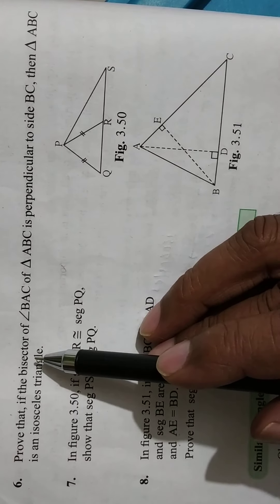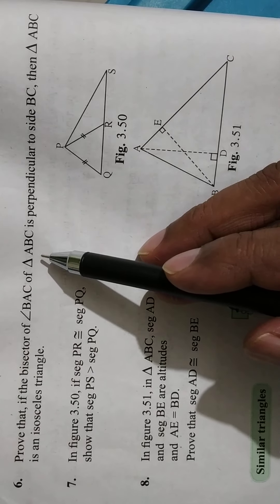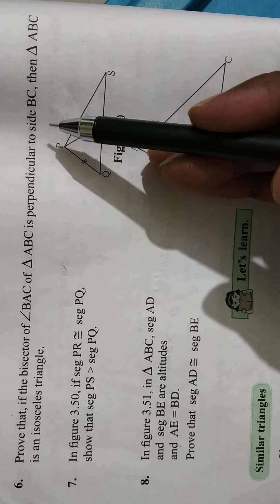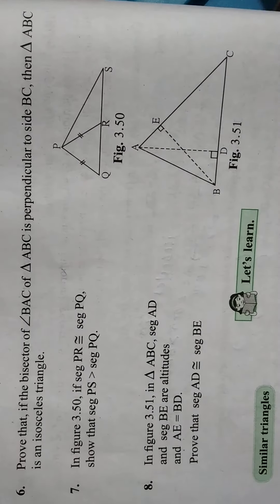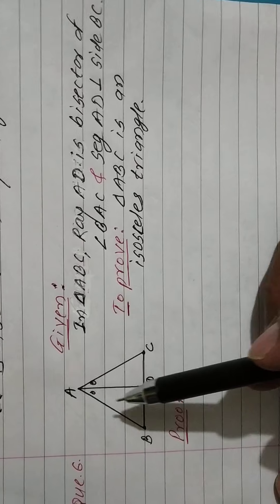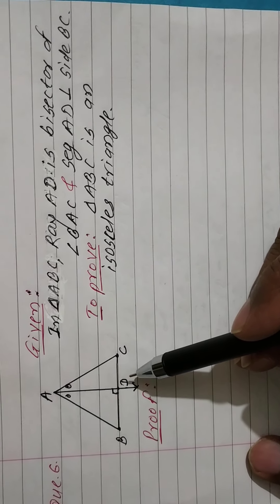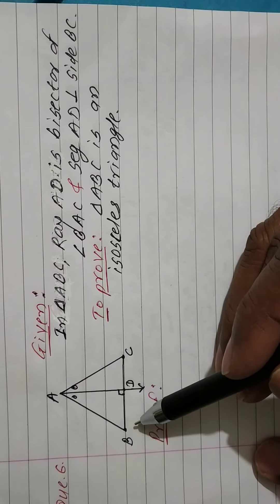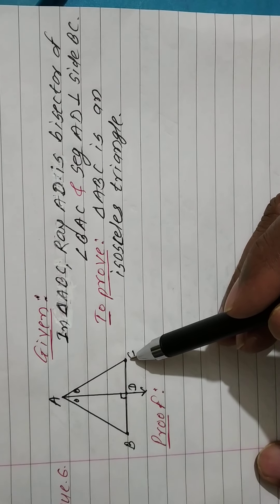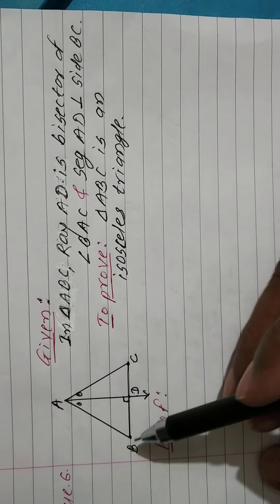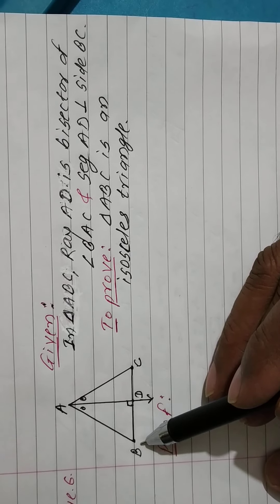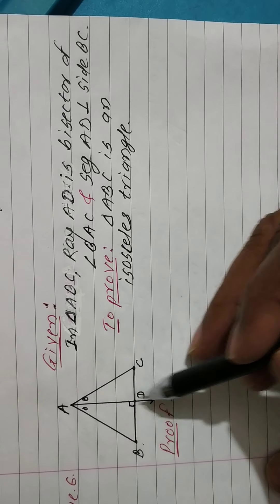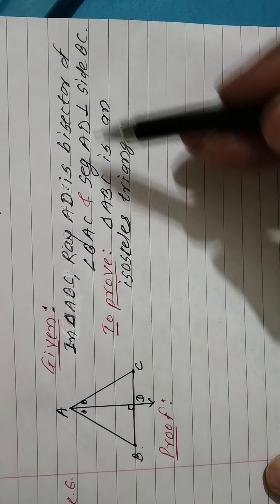Question number 6: prove that if the bisector of angle BAC of triangle ABC is perpendicular to side BC, then triangle ABC is an isosceles triangle. From this statement, I draw triangle ABC in which AD is the bisector of angle BAC and AD is perpendicular to side BC. This is given.